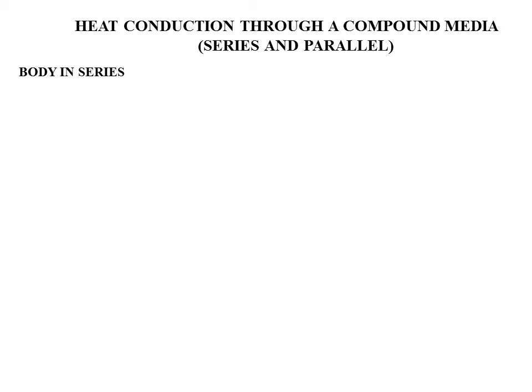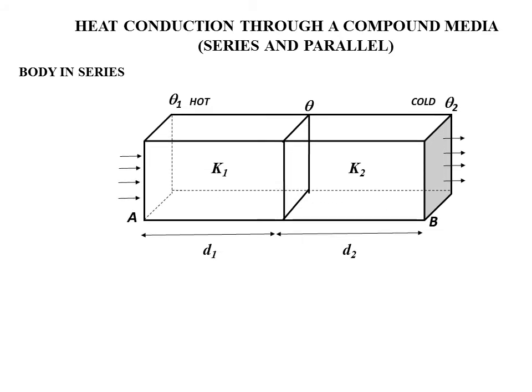When bodies are connected in series, consider two materials connected together. The thermal conductivity is denoted as K1 and K2. Theta 1 is the hot end and theta 2 is the cold end. There is an intermediate point theta where the temperature is constant — the same for both blocks.